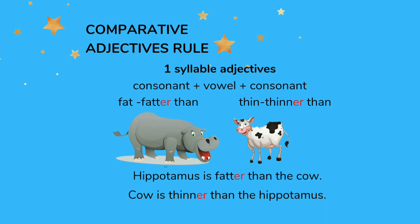For one-syllable adjectives that end in consonant-vowel-consonant, the last consonant is doubled in the comparative form. For example, fat becomes fatter than — a hippopotamus is fatter than a cow. Thin becomes thinner than — a cow is thinner than a hippopotamus.